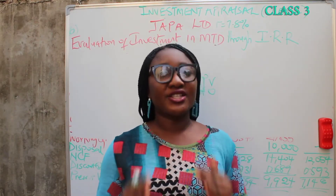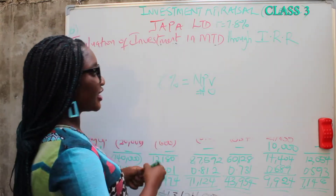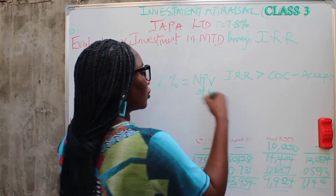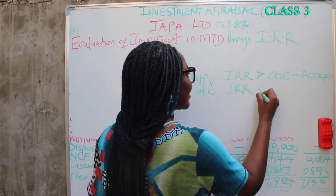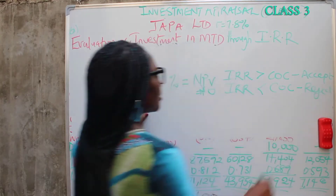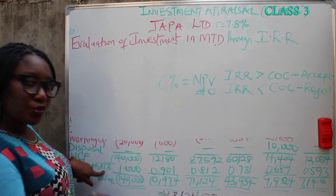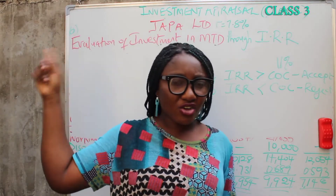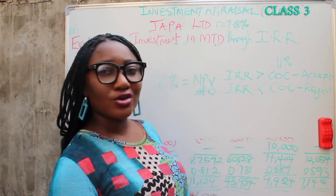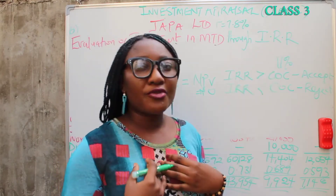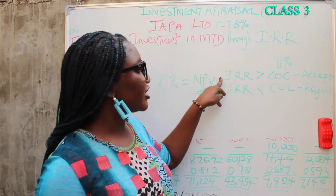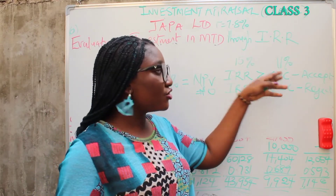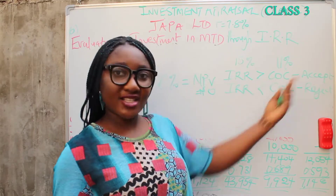The break-even point is when your NPV is zero. The decision criteria: when your IRR is greater than your cost of capital, you should accept the project. When your IRR is less than your cost of capital, you should reject the project. Cost of capital is the minimum required rate of return. If your IRR is, let's say, 15%, your return is greater than your minimum required rate of return, so you can accept the project.